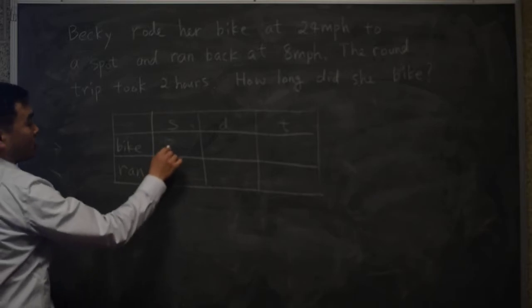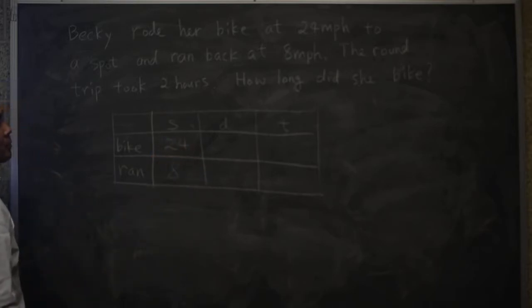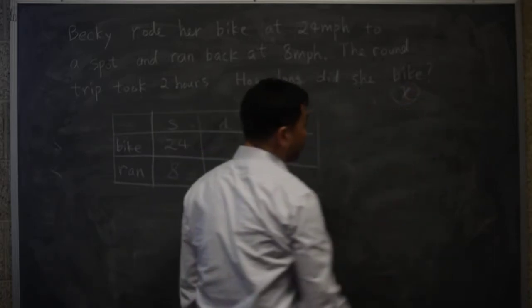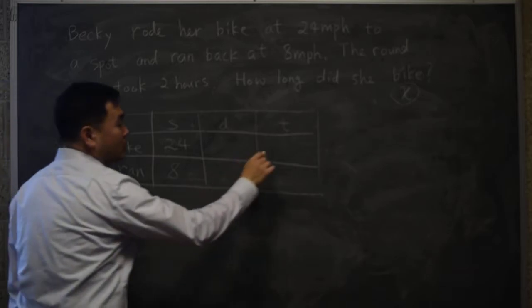Now the speeds are given, 24 for the bike, 8 for the running. And then, it's asking for how long did she bike, so let's take this as x, that's the time that she took the bike, so let's put that here.